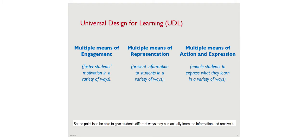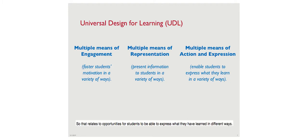The point is to give students different ways they can actually learn and receive information. The third category is multiple means of action and expression - opportunities for students to express what they've already learned in different ways. Maybe through speech, sign language, writing, drawing, or typing on a computer. Those are the three core categories.